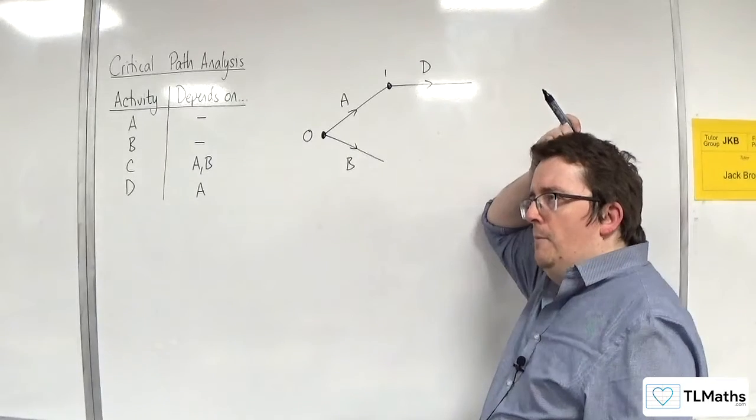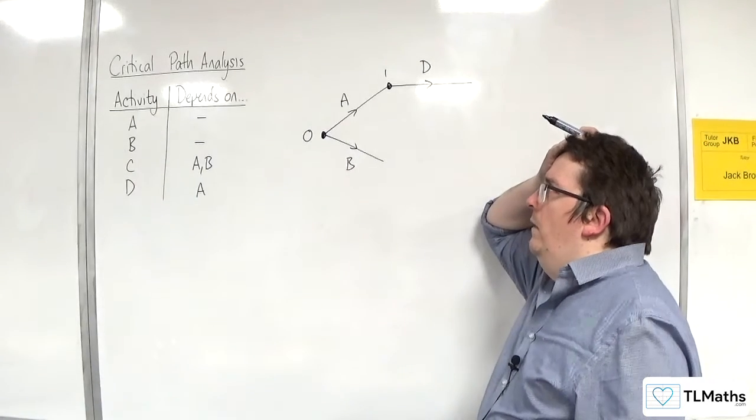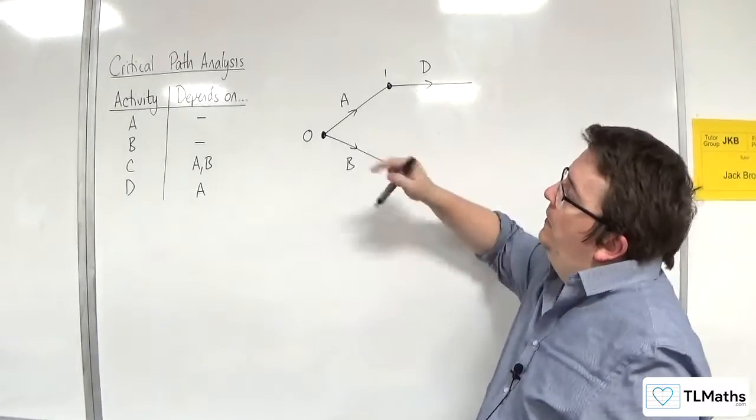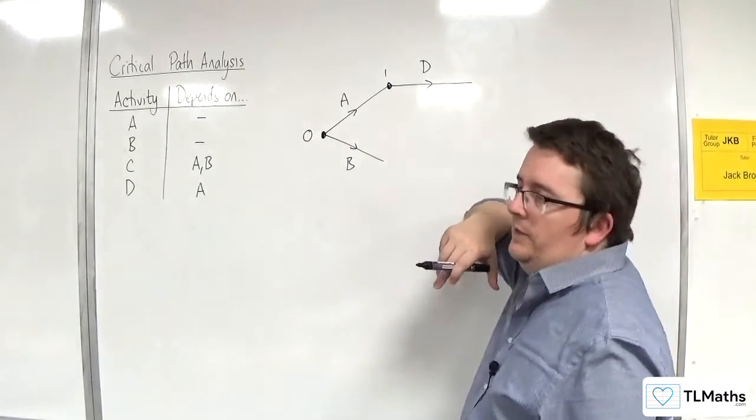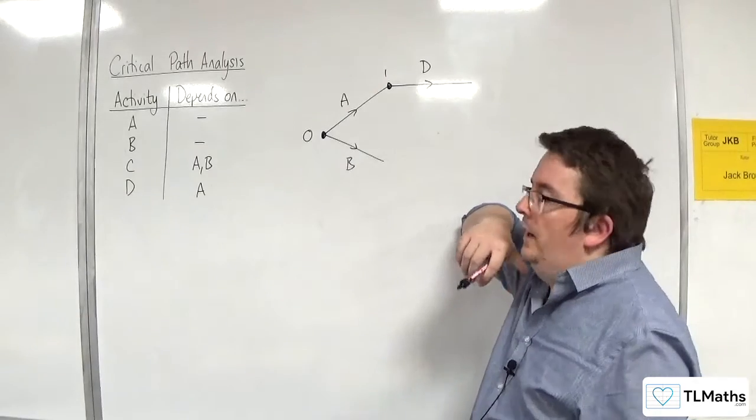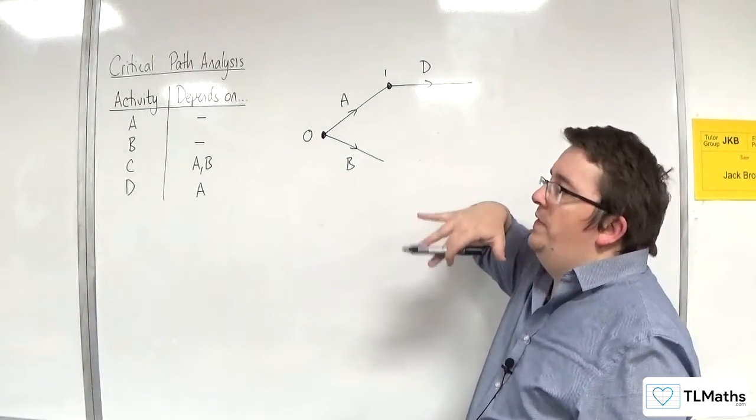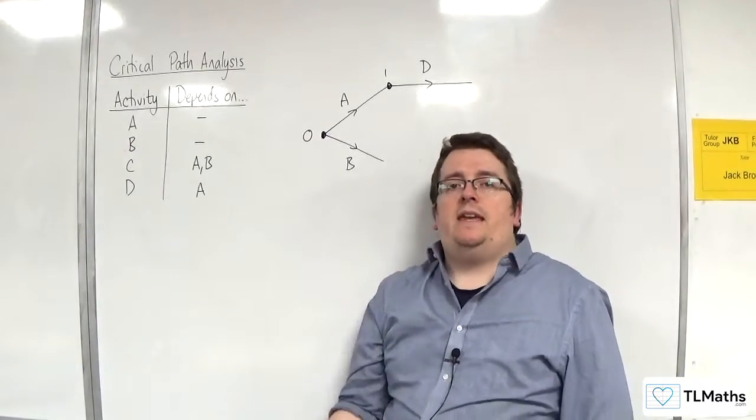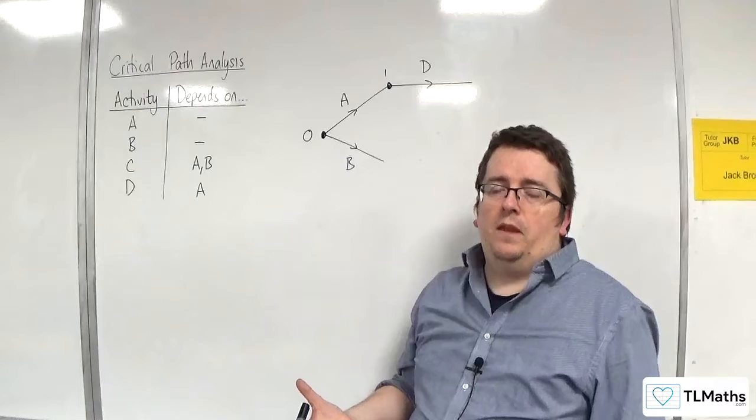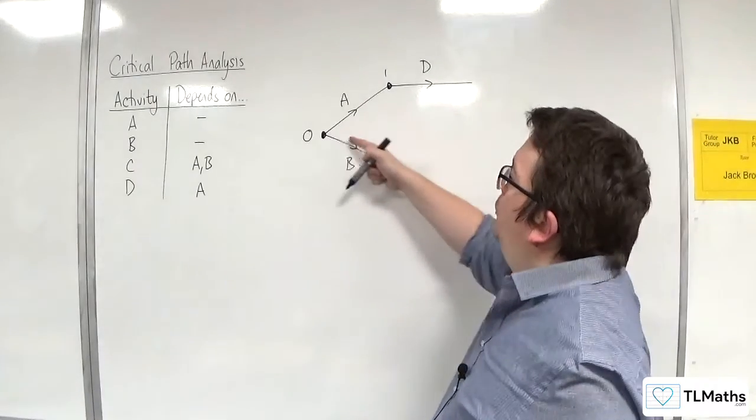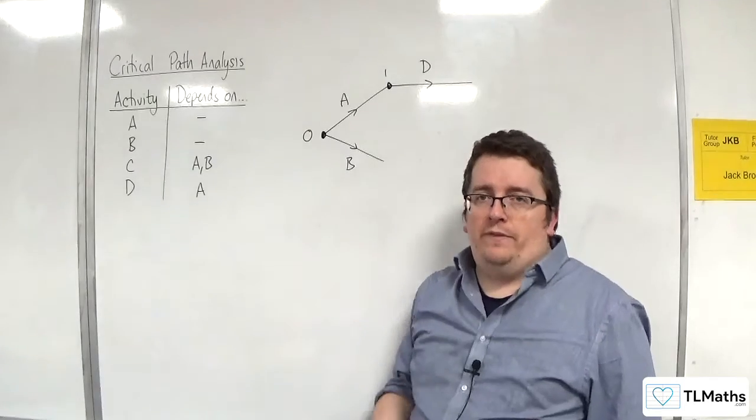Now, the problem is this, that I could have this arc kind of sweep around and hit that node. But the problem with that is that would then be saying that activity D relies on activity A and activity B. So I can't have this kind of multiple edge situation here. So I need to find another way around that.